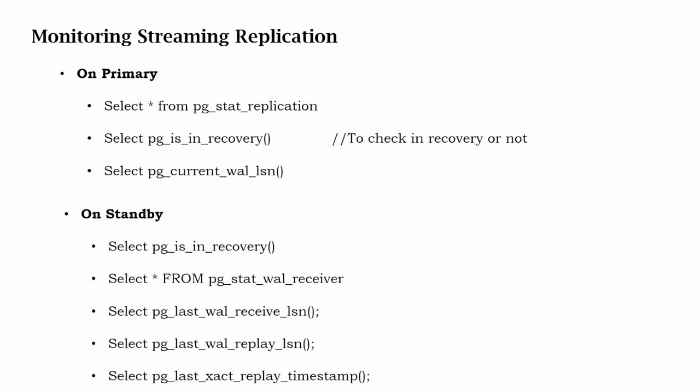To monitor streaming replication, the main command is pg_stat_replication, which shows the standby IP, the status, and what kind of replication is being performed — sync or async. The select pg_is_in_recovery() command lets you check if the database is in recovery mode. On the primary the output should be false, and on the standby it should be true. You can also use select pg_current_wal_lsn() to check the current LSN on the primary.